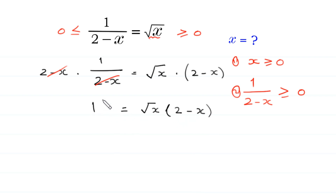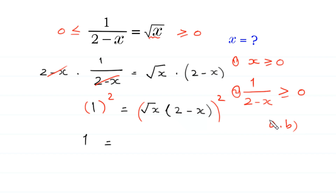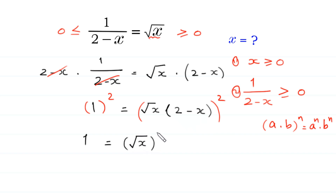Now from here we take the square of both sides of this equation. Square of 1 is 1. According to the property of exponents, a times b whole to the power n equals a to the power n times b to the power n. This power 2 will become the power of square root of x, and this power 2 will become the power of 2 minus x.